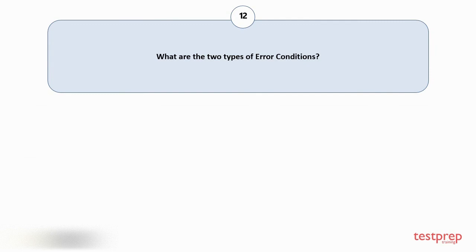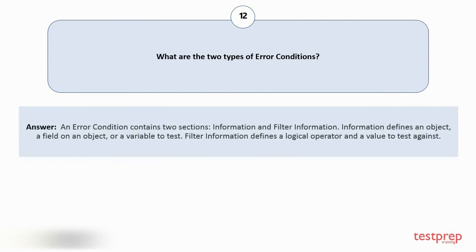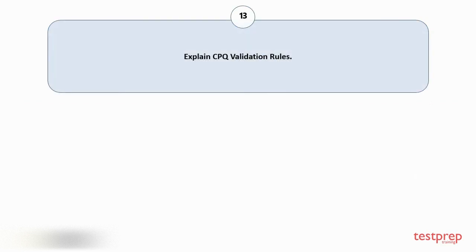Question number twelve: What are the two types of error conditions? An error condition contains two sections: information and filter information. Information defines an object, a field on an object, or a variable to test. Filter information defines a logical operator and a value to test against.